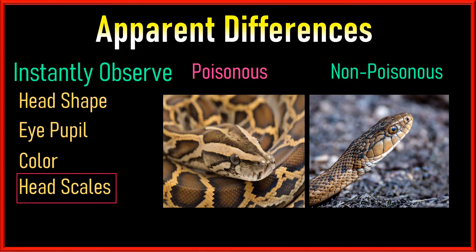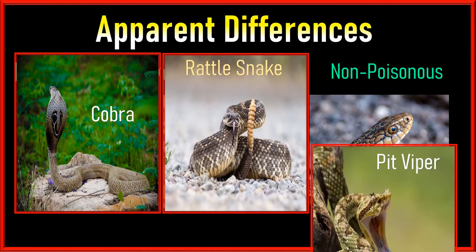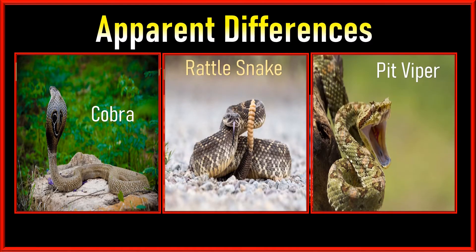These strategies are for unfamiliar snakes. Well-known snakes like the king cobra, rattlesnakes, and pit vipers can be identified by their respective features: distinctive hoods, rattles at the tail, and heat-sensing pits on the head.